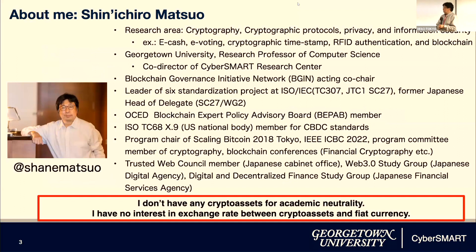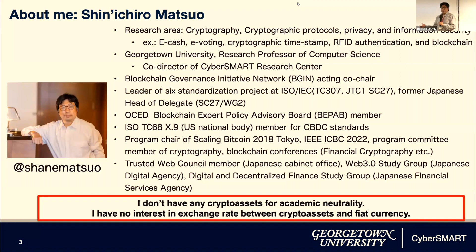This is a very busy slide, but my background is cryptography and its application. I'm a research scientist with over 27 years of experience, and currently I'm doing a lot of work on research and standardization for blockchain technology. I'm directing a blockchain research center at Georgetown University in Washington DC. I say the same thing at every presentation: I don't have any crypto assets, for academic neutrality — if I had bitcoin and I liked some academic paper for improving bitcoin technology, someone might say the paper intends to increase the price of bitcoin.